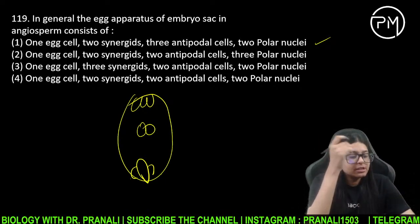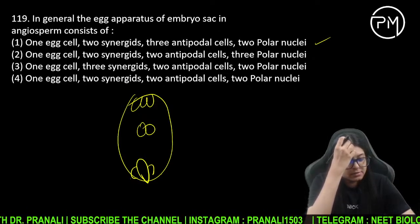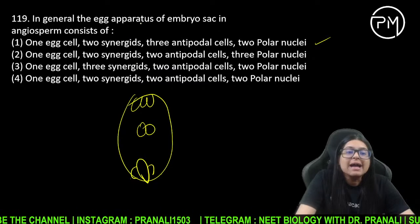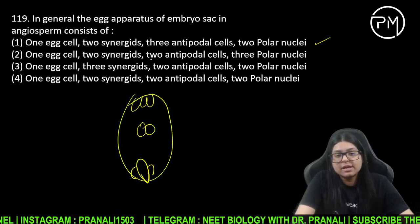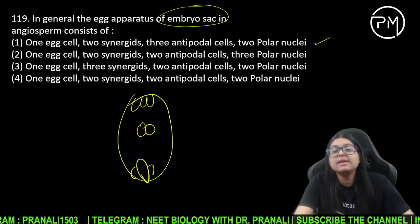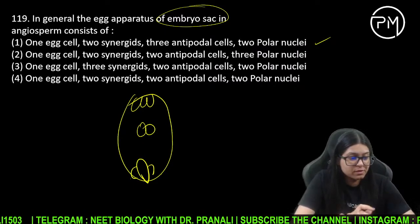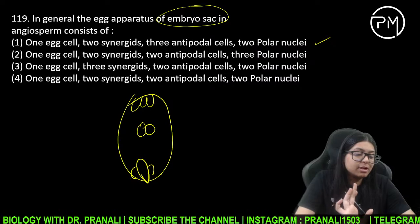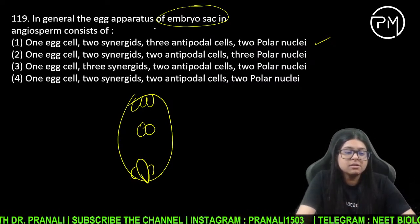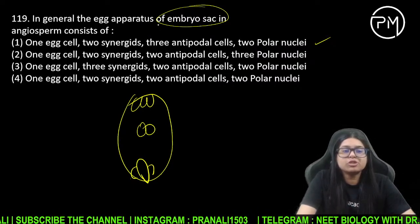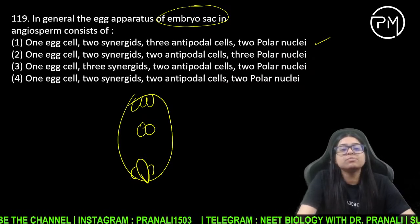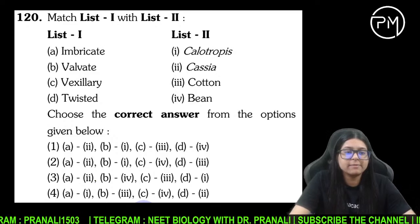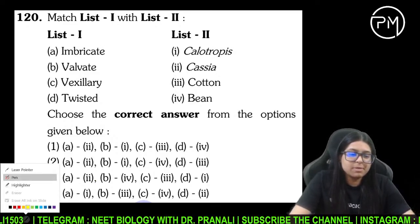Actually unhoone question galat pooch liya hai — egg apparatus consist of pooch raha hai jabki kya poochna chahiye tha: embryo sac consist of. Toh jo NEET ka paper hua, wahan pe bhi NTA ne garbad question pooche hain. Egg apparatus consist of pooch ke embryo sac consist of pooch liya hai. Chalie next question pe aate hain.